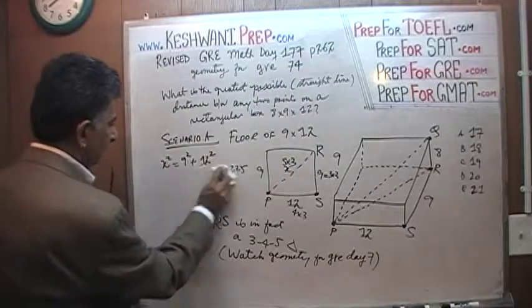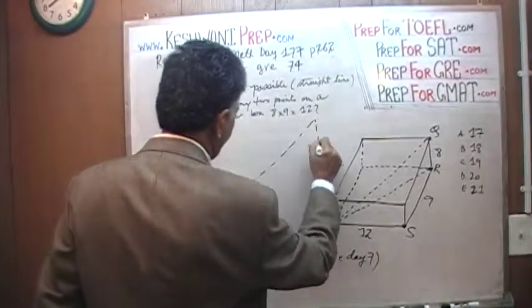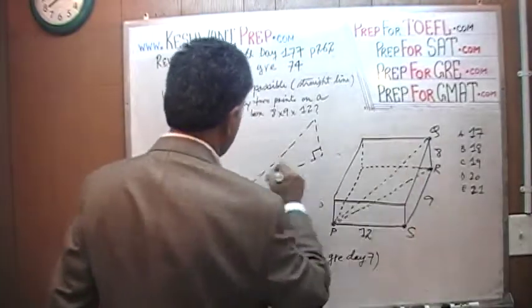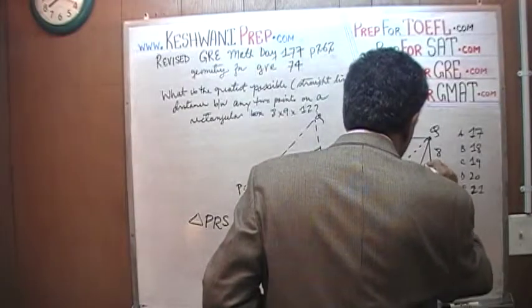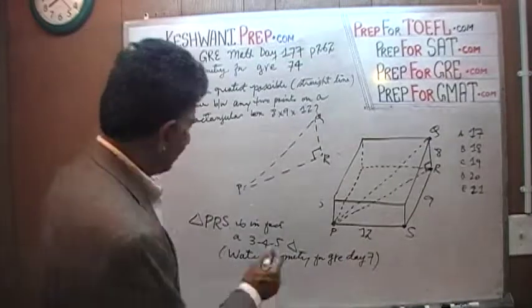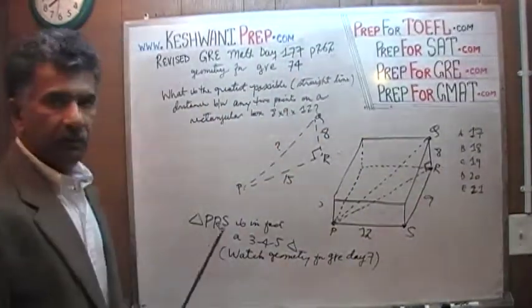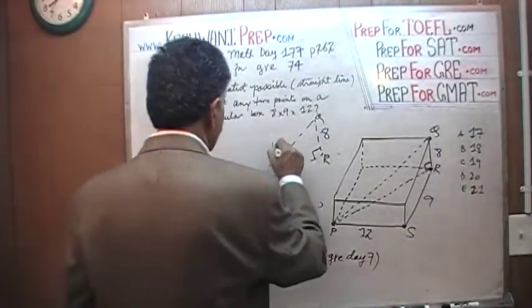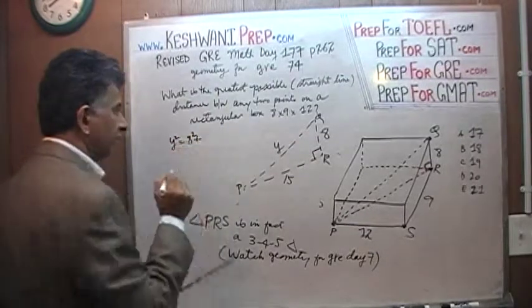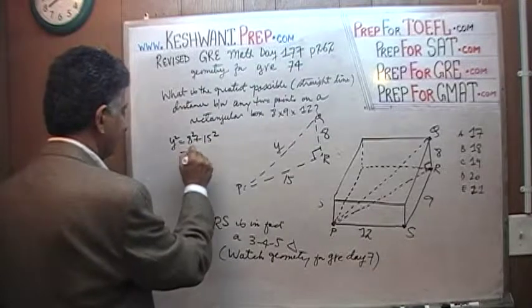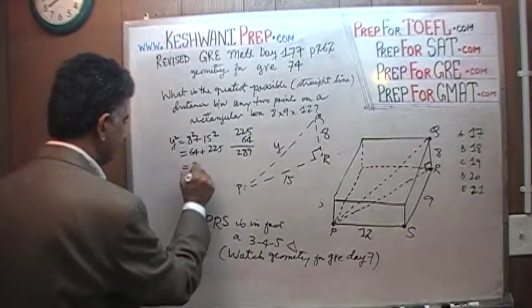We are done with this. The floor is 15. Now we look at this triangle PQR. As you can see here, this makes a 90 degree angle. We just found that P to R, which is the floor diagonal, is 15. Q to R is 8. We just have to find this guy. Let's call it Y. Y squared equals 8 squared plus 15 squared, which is 64 plus 225, giving us 289.